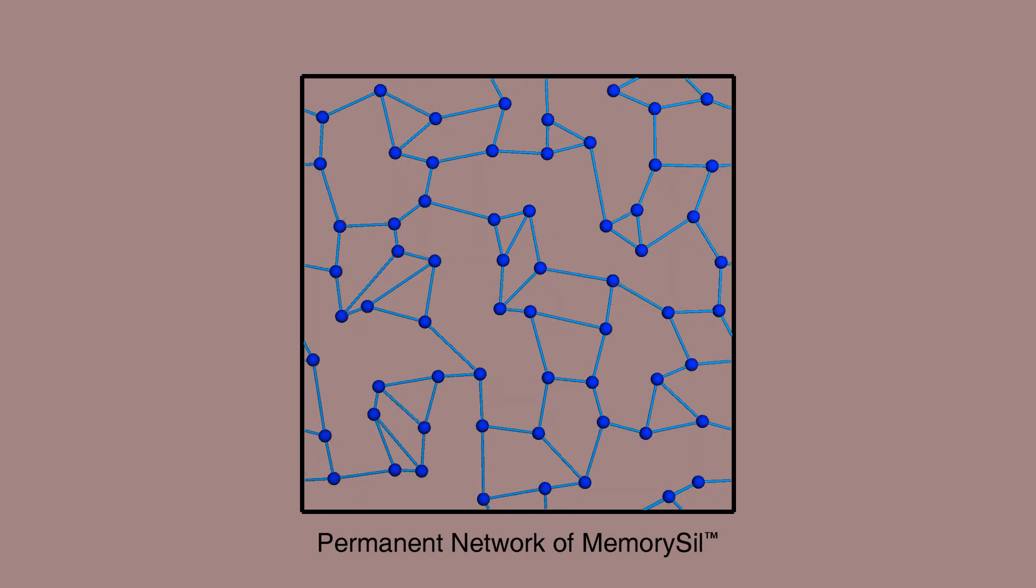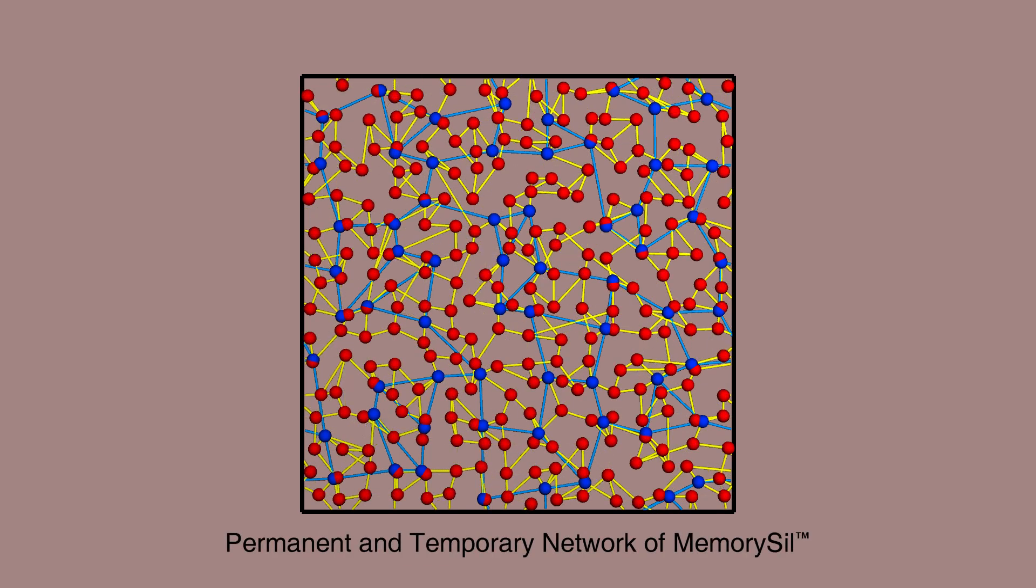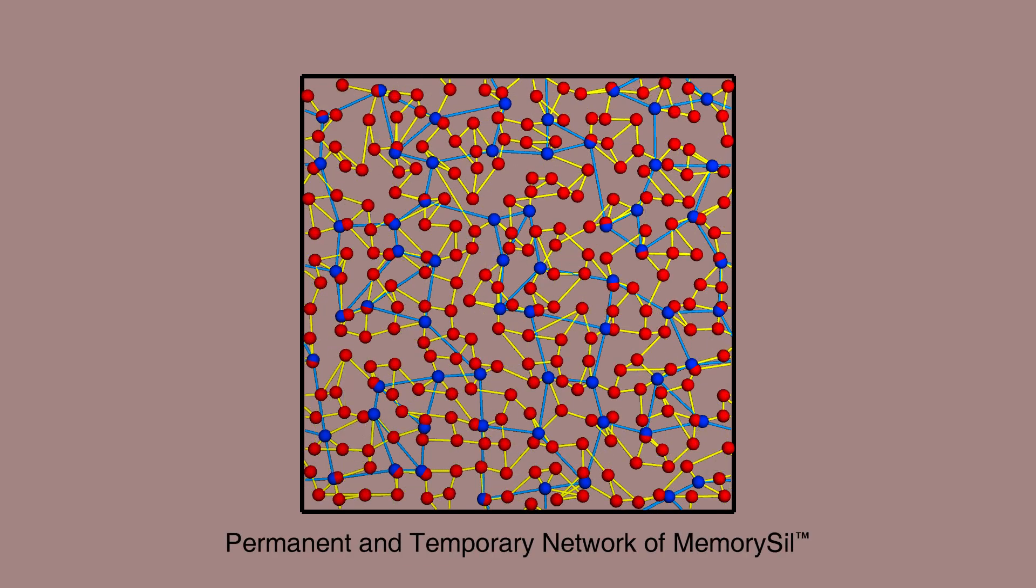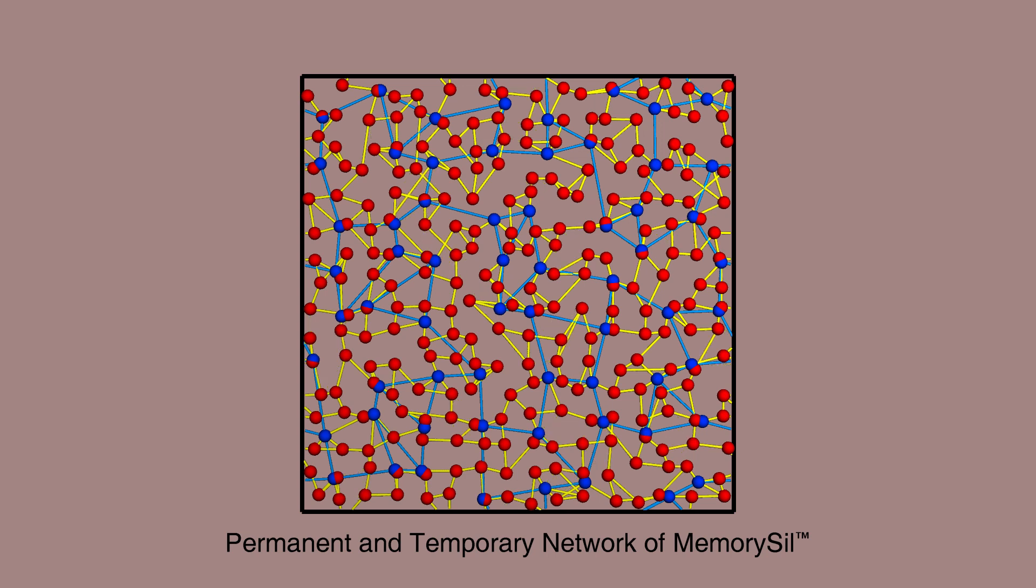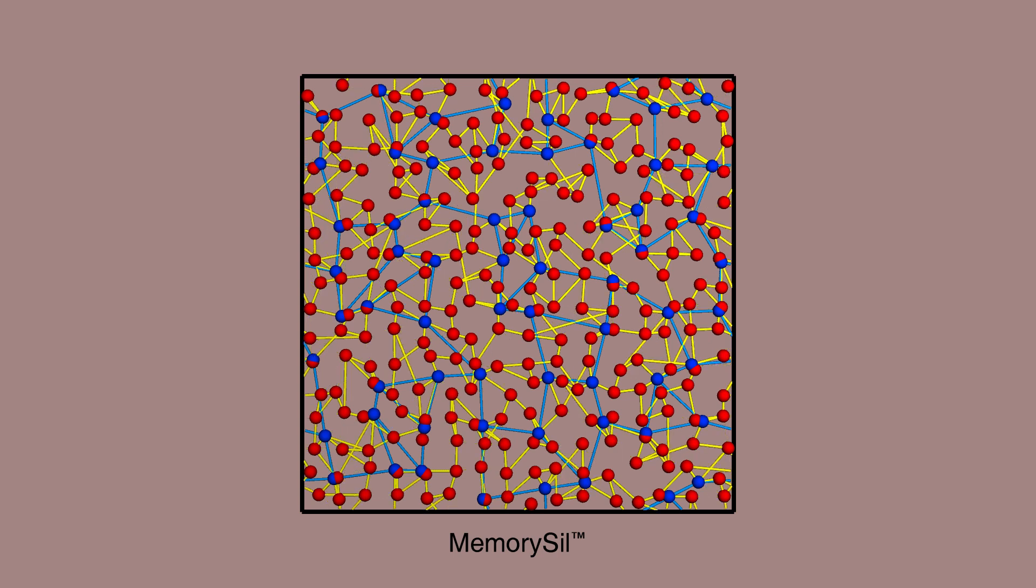Memory sill has enough permanent crosslinks to give its network a permanent shape, but its temporary crosslinks also allow its network to adapt to new shapes temporarily. Memory sill's network effectively has two parts, a permanent part and a temporary part.